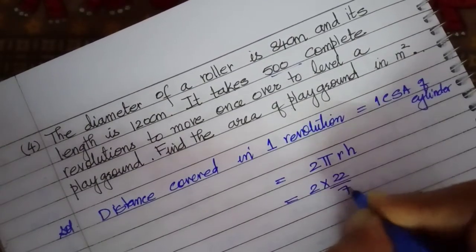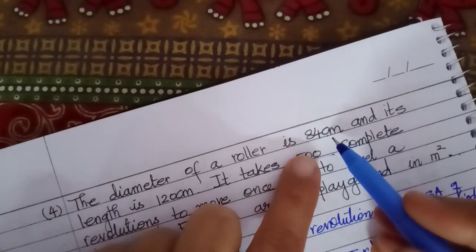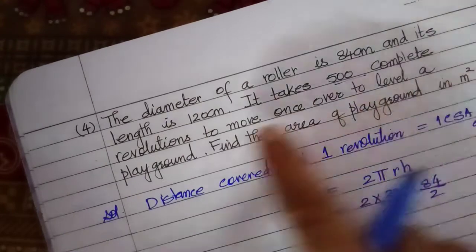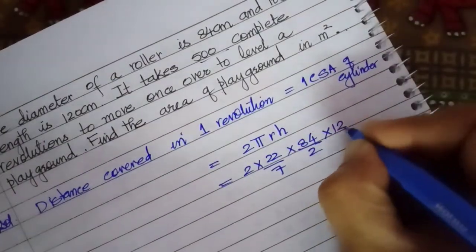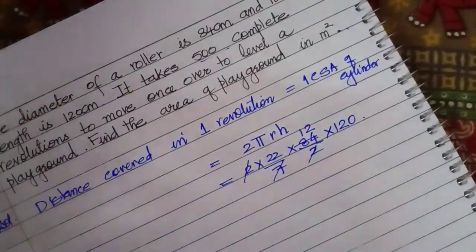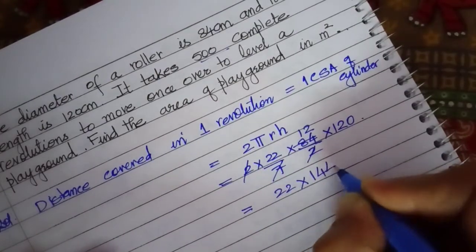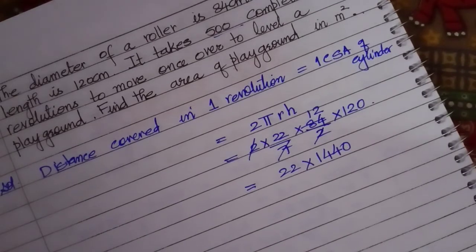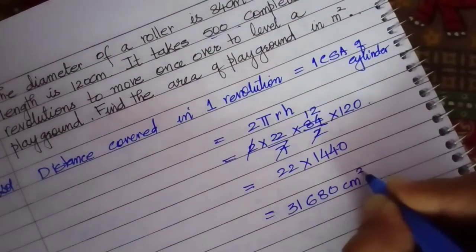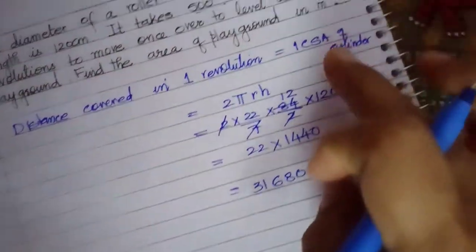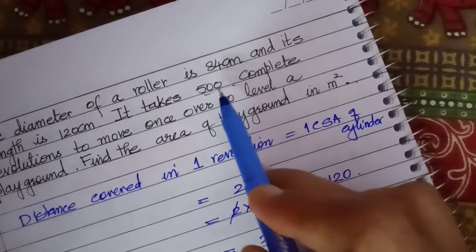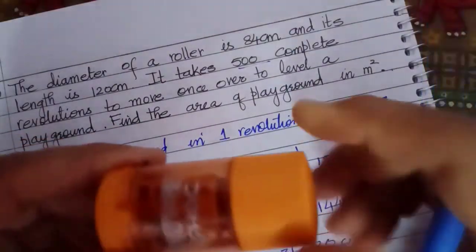2 into 22 by 7. What is the diameter given as? 84. So radius will be 84 by 2. And what is the length given as? 120 cm. Length of the roller is 120. 2 and 2 gets cancelled. 7 ones, 7 twos. I get it as 22 into 1440. 1440 into 22. 31680 cm square. This is the area covered in one curved surface area. And how many curved surface areas we have to take into consideration? 500. Because 500 times this roller rotated in this manner, 500 times.